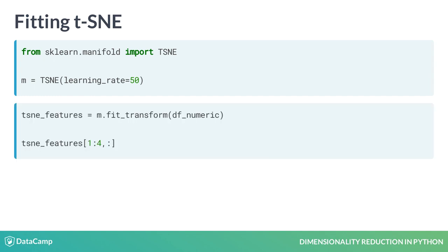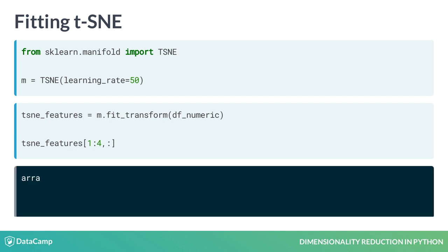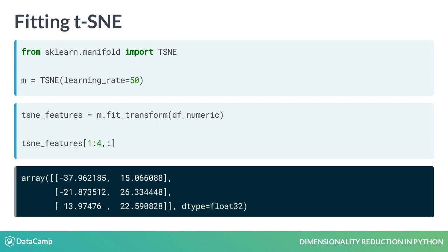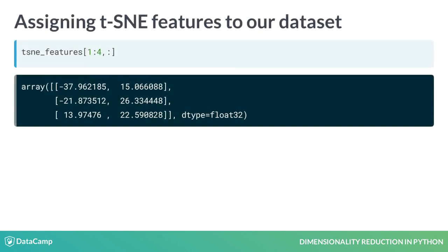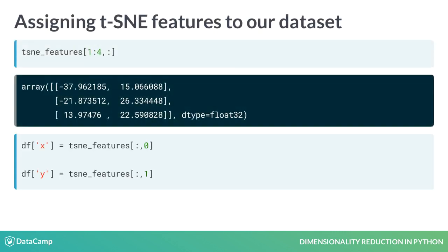Next, we'll fit and transform the TSNE model to our numeric dataset. This will project our high-dimensional dataset onto a NumPy array with two dimensions. We'll assign these two dimensions back to our original dataset, naming them X and Y.